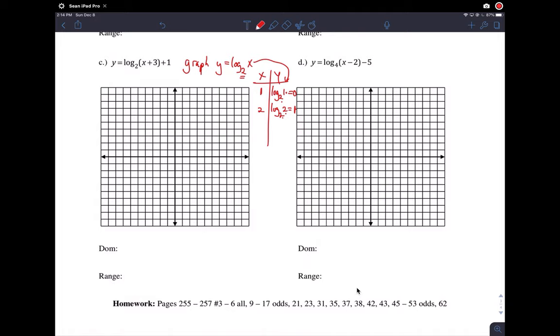So our first two points on our graph would be 1, 0, and then 2, 1. And now you should see something like this should be the shape, and that's correct because this base here, B, which is 2, is bigger than 1. Whenever the base is bigger than 1, it's a logarithmic growth function, and if the base is less than 1 but bigger than 0 and not equal to 1, then it's a logarithmic decay function.